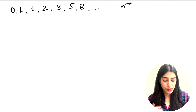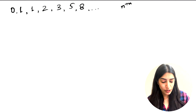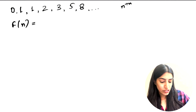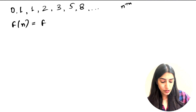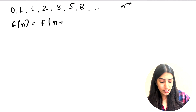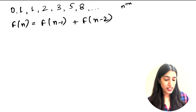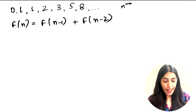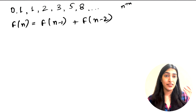Let's first write a general simple function and then understand why this is recursion. If you see, F(n) at any point is equal to the previous number plus the number before that — so F(n-1) plus F(n-2). This is what the definition itself says, and if you see this formula, this is nothing but a recurrence relation.